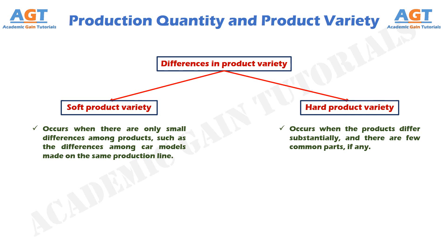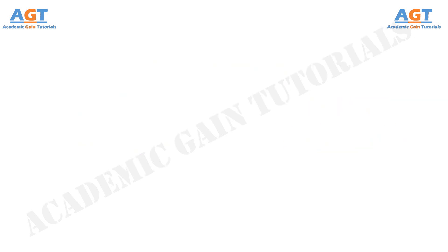So, we have studied in detail about manufacturing industries and products, including discussion on manufacturing industries, manufactured products, production quantity and product variety. Thank you.